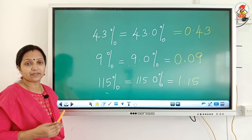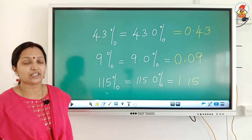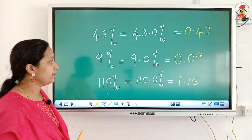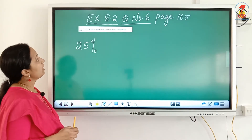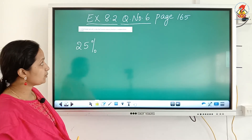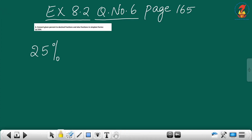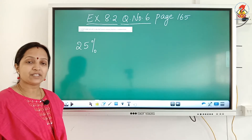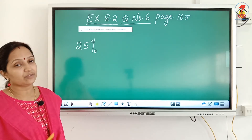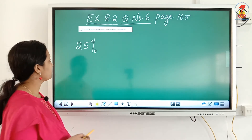So now we know how to convert percent into fractions and decimals. We will do Exercise 8.2, question number 6, page number 165. Convert the given percent to decimal fractions and also fractions in the simplest form. Simplest form means you have to reduce the fraction to its lowest term.